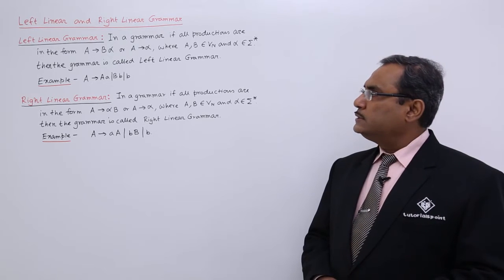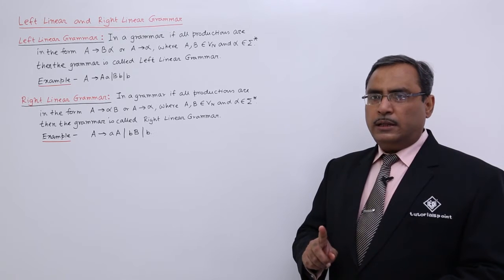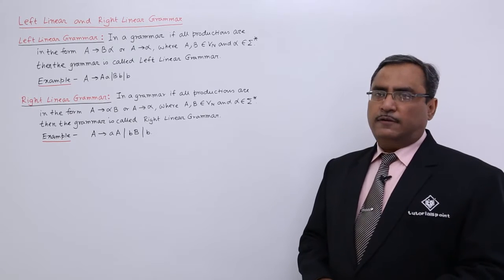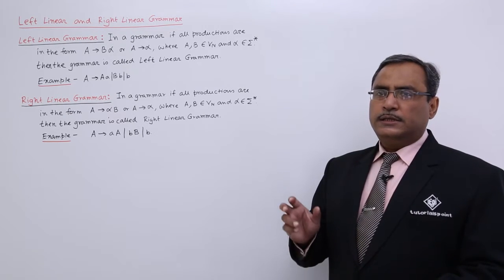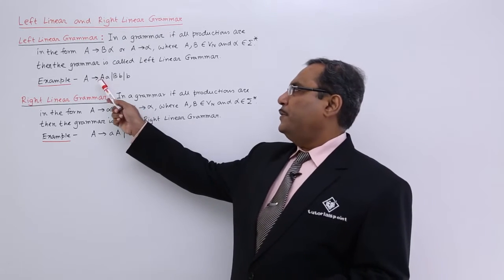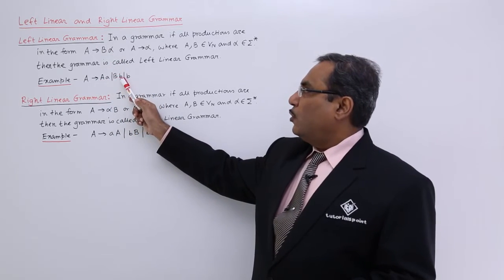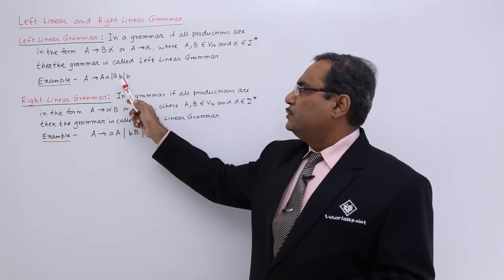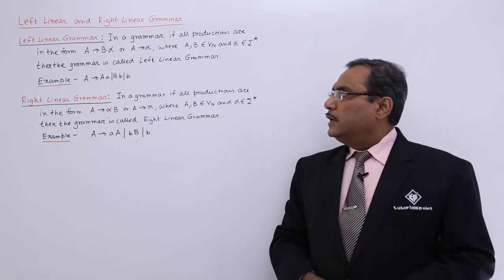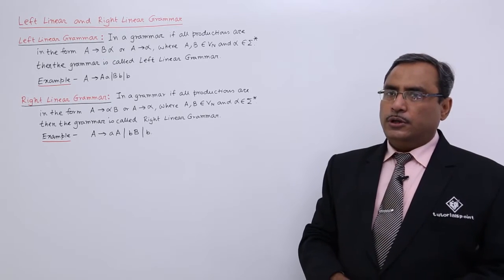In case of left linear grammar, the grammar will always have either a single non-terminal followed by a collection of terminals which may or may not be present, or A produces alpha, meaning A produces a set of terminals including epsilon. As examples: capital A produces capital A small a, capital B produces capital B small b, and A produces small b — all fall into this category. These are known as left linear grammar production rules.